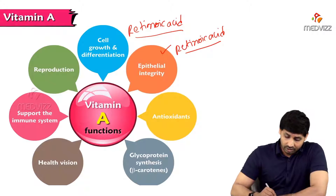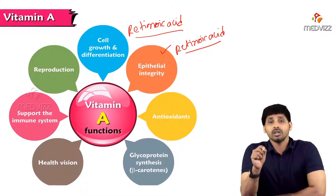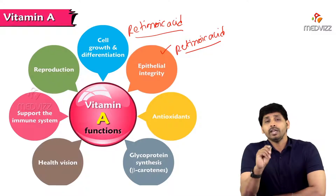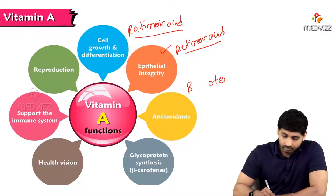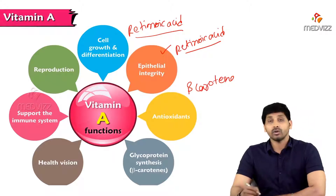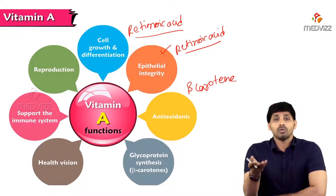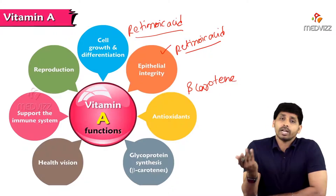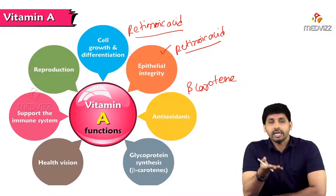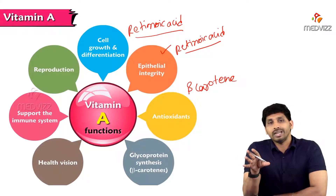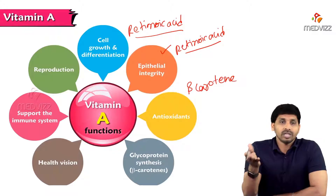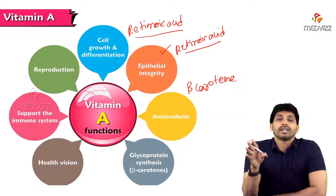The third function is antioxidant. One correction here: vitamin A itself may not be useful as an antioxidant, but beta-carotene is. Beta-carotene is a pro-vitamin of vitamin A, so indirectly vitamin A acts as an antioxidant. In MCQ exams, they may ask which form of vitamin A acts as an antioxidant — the answer is beta-carotene.